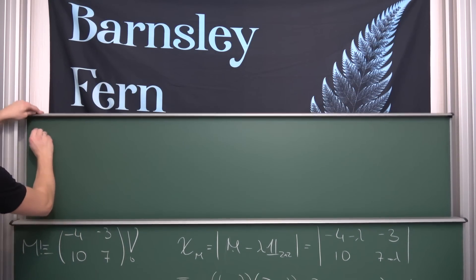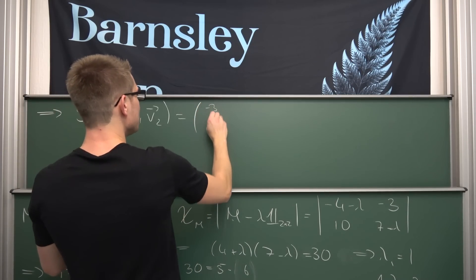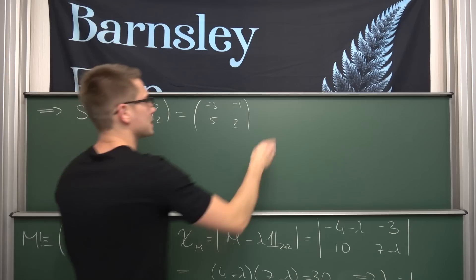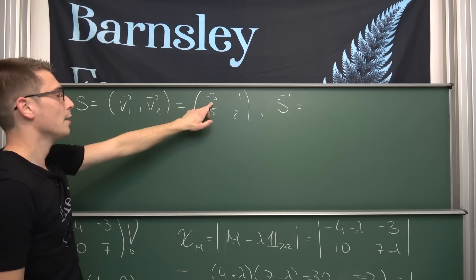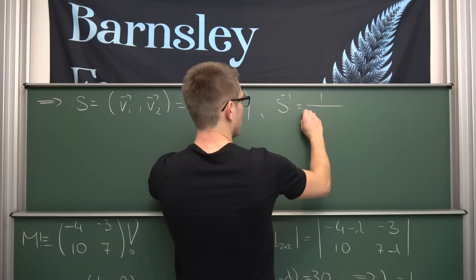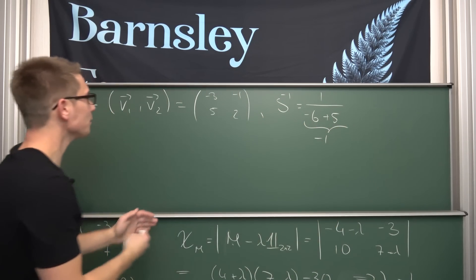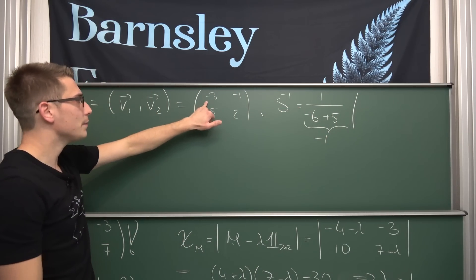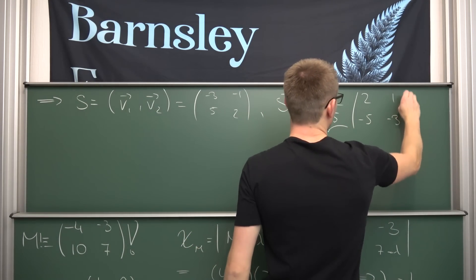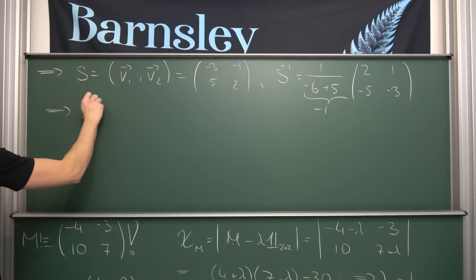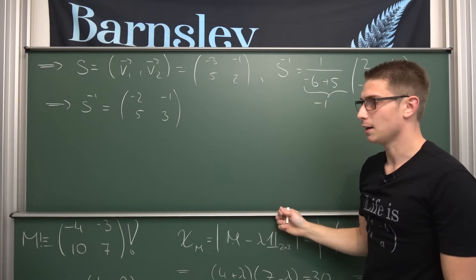Our matrix S is hence just a tuple of our eigenvectors: negative 3 and 5 in the first column, and negative 1 and 2 in the second. Now we construct the inverse of matrix S. The determinant of S is negative 3 times 2 equals negative 6, plus 5, giving negative 1. So S inverse equals negative 1 times the adjugate: swapping the diagonal gives 2 and negative 3, and changing signs gives negative 5 and 1. Multiplying through by negative 1, S inverse is: negative 2, negative 1, 5, 3.